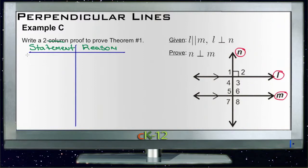So let's start with our givens. We know that L is parallel to M, so L is parallel to M, that's a given. And we also know that L is perpendicular to N, that's another given.